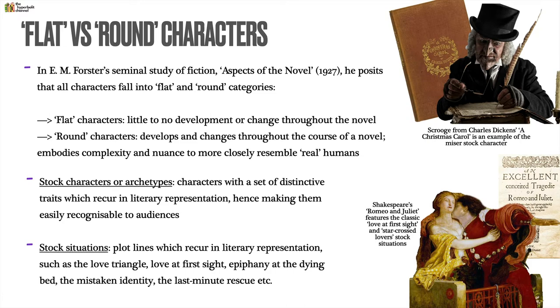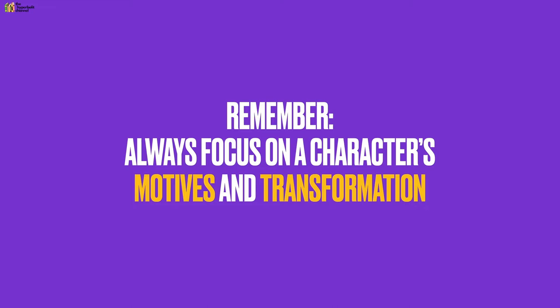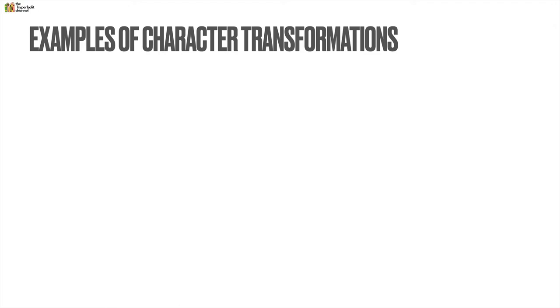Shakespeare's Romeo and Juliet features two classic stock situations: love at first sight and the star-crossed lovers narrative. When we're analyzing characters, we always want to focus on their motives and their transformation — what motivates them to do or say certain things, and how they change throughout the course of a story.